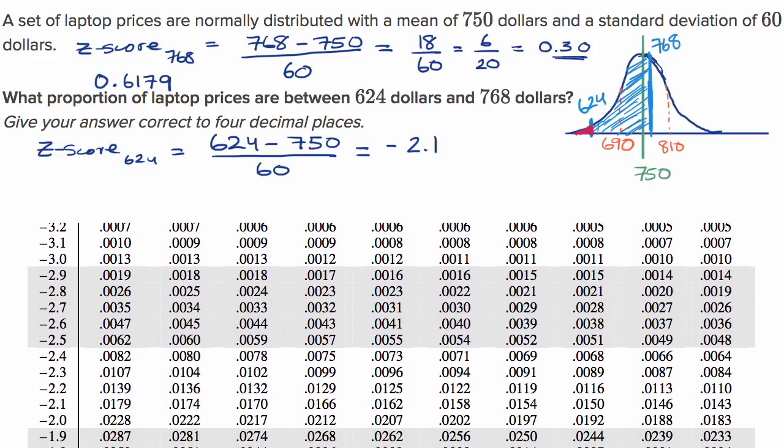So we are at negative 2.10, so we have zero hundredths, so we're going to be right here on our table. The proportion that is less than 624 is 0.0179.